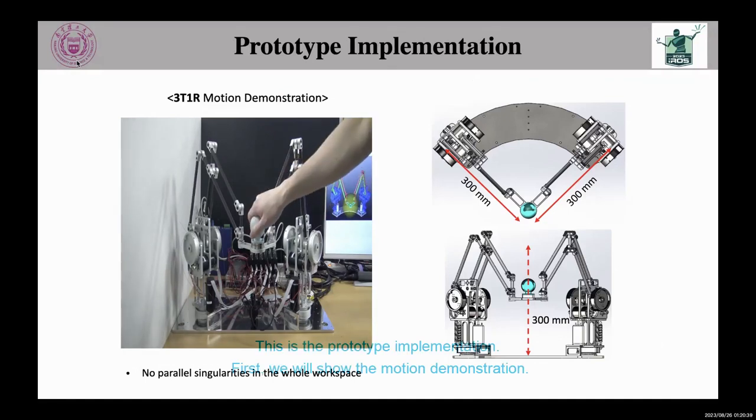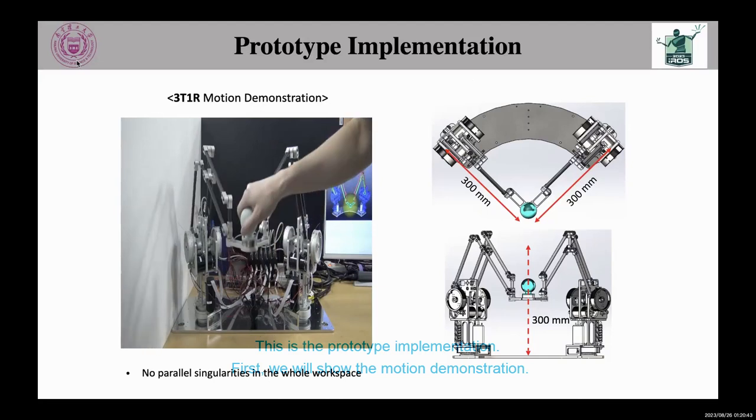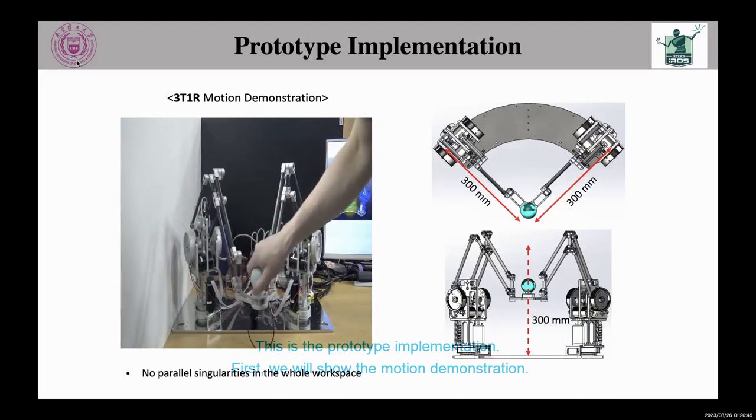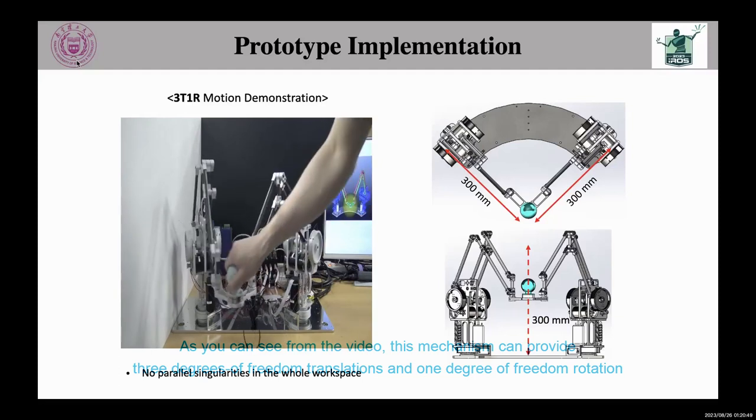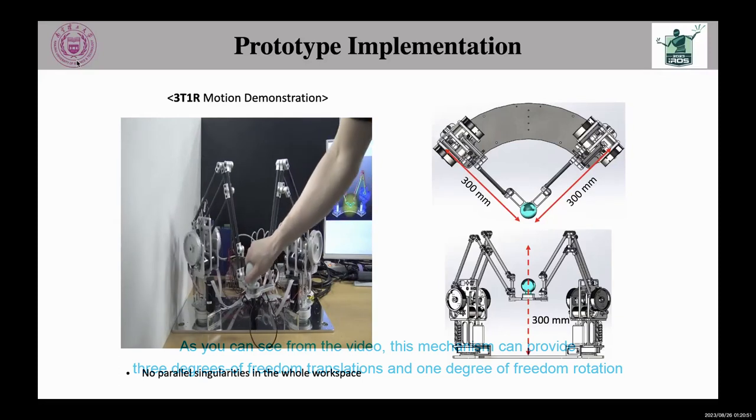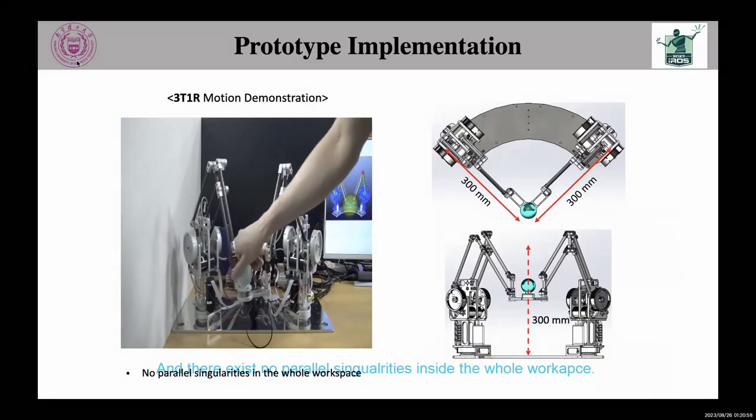This is the prototype implementation. First, we will show the motion demonstration. As you can see from the video, this mechanism can provide 3 degrees of freedom translations and 1 degree of freedom rotation, and there exists no parallel singularity inside the whole workspace.